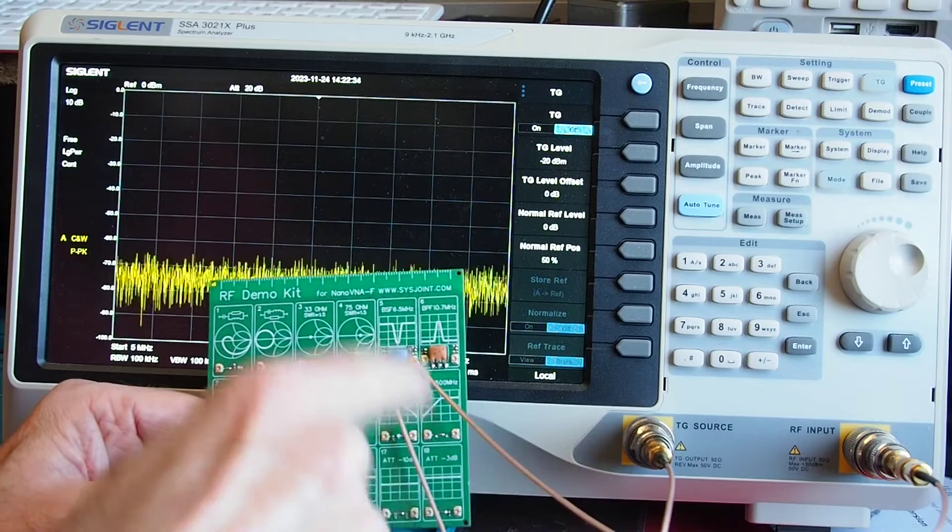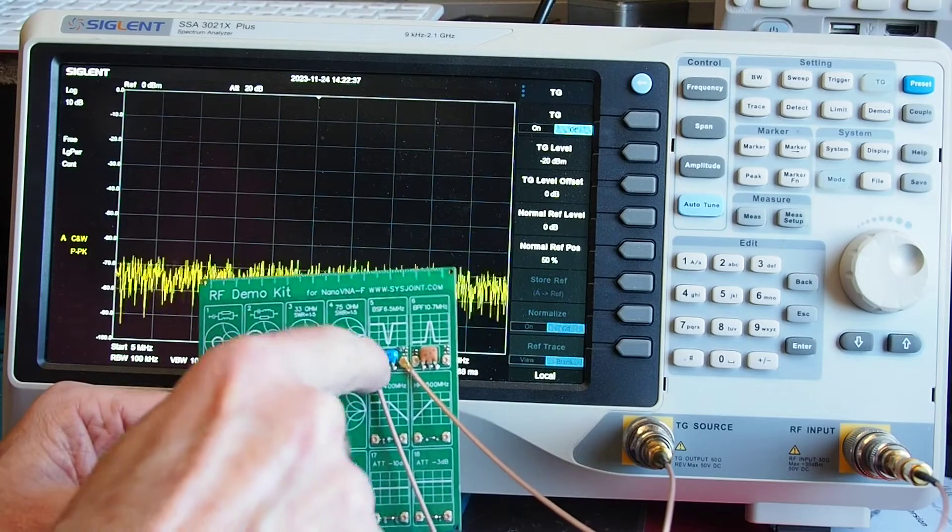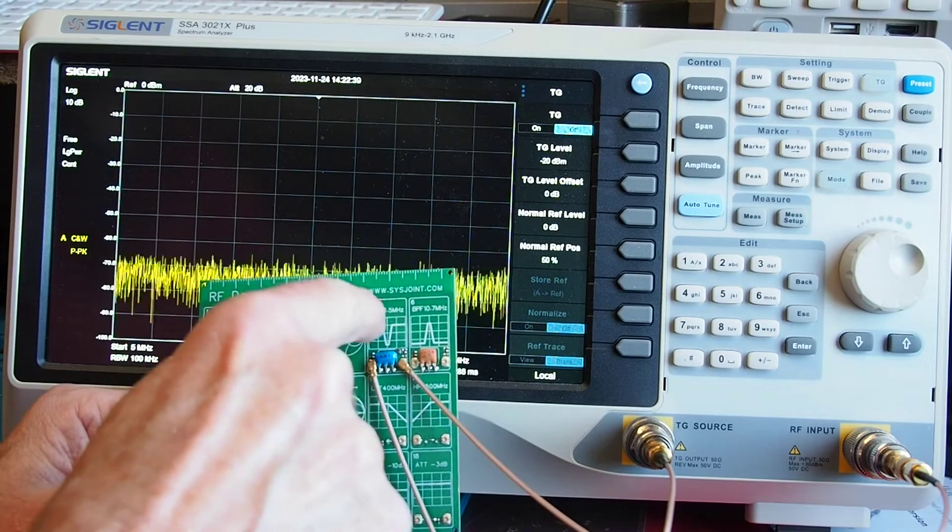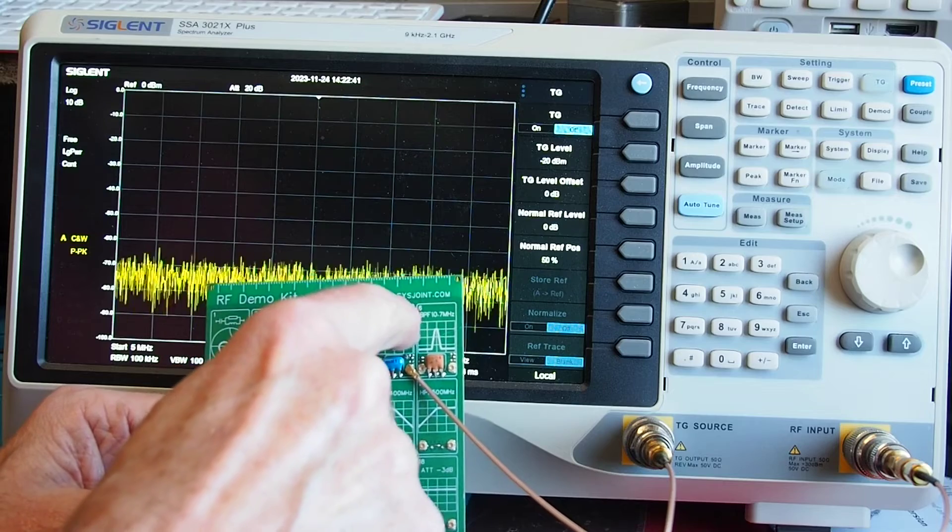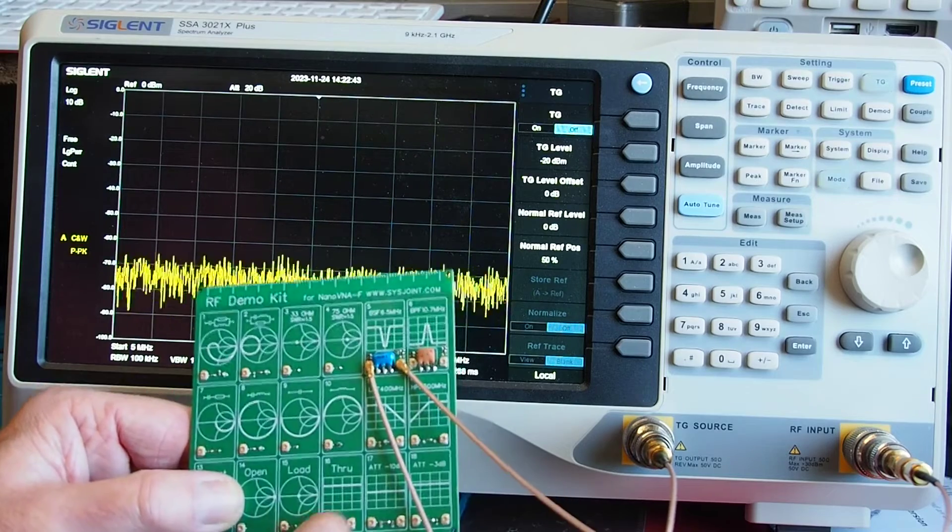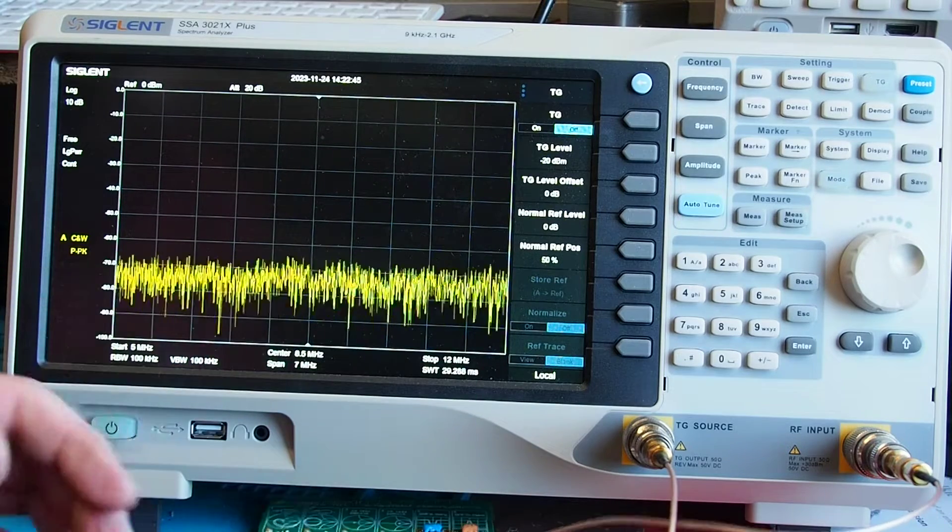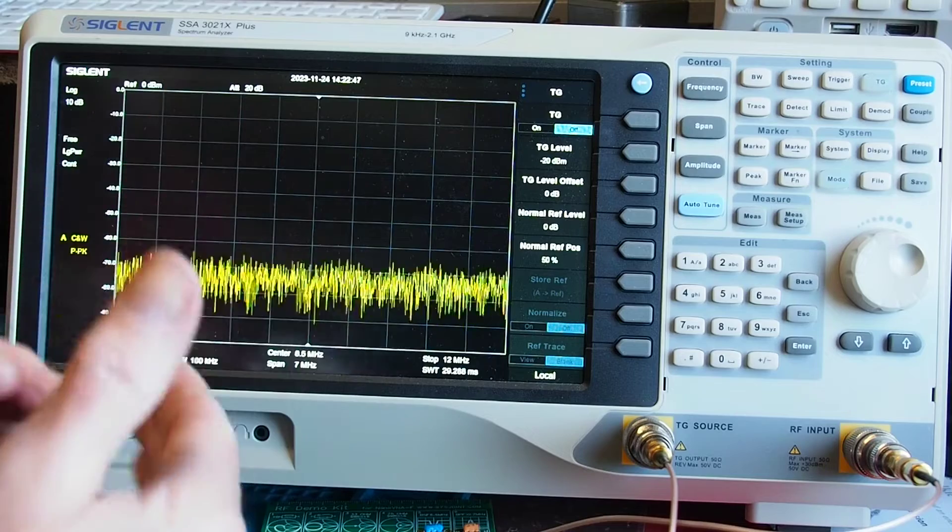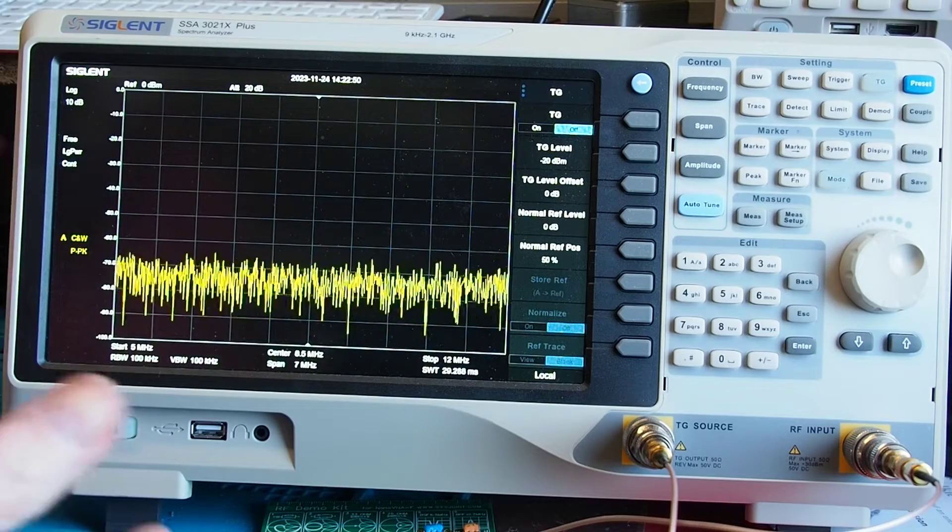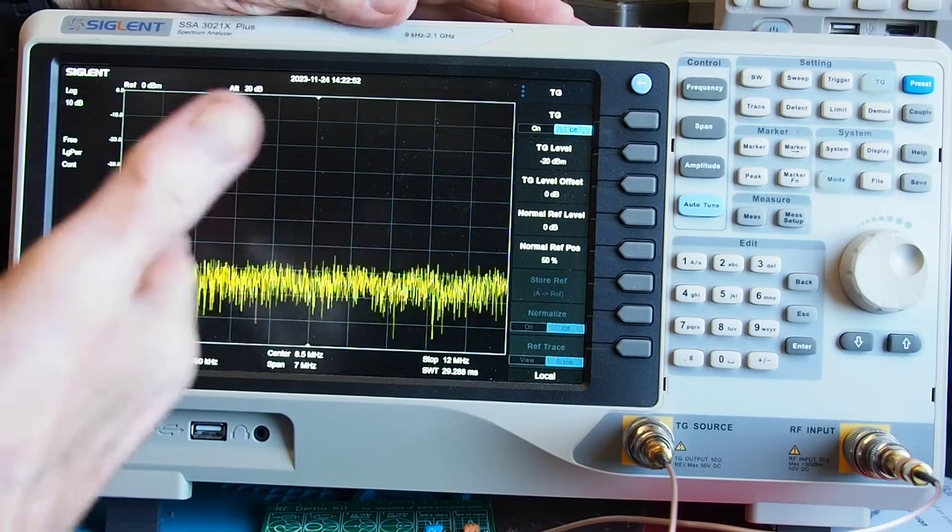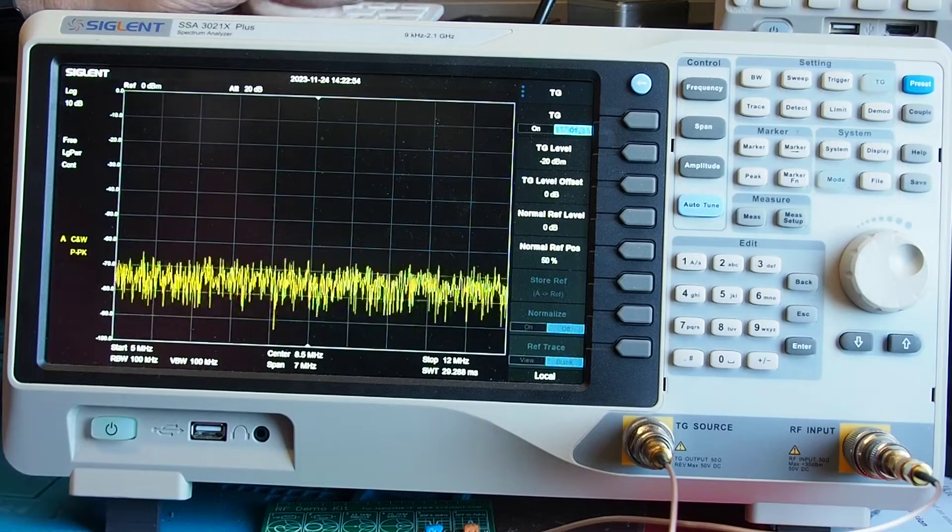Okay so I've got tracking generator into one side and input onto the other. I've got the band stop filter 6.5 megs there so that's all connected up. I've not turned off the machine so the normalizing I did to the trace is still valid.